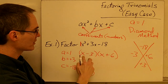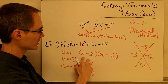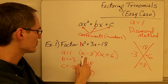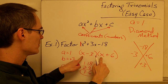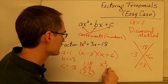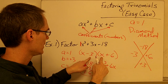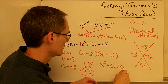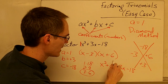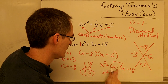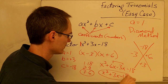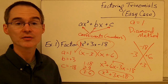Remember, I can always check my factoring by multiplying the two binomials together using FOIL — I should get back the expression I started with. First terms: x times x is x squared. Outer: x times positive 6 is positive 6x. Inner: negative 3 times x is negative 3x. Last: negative 3 times 6 is negative 18. Combining like terms gives me x squared plus 3x minus 18, which matches what I started with, so I know I factored correctly.